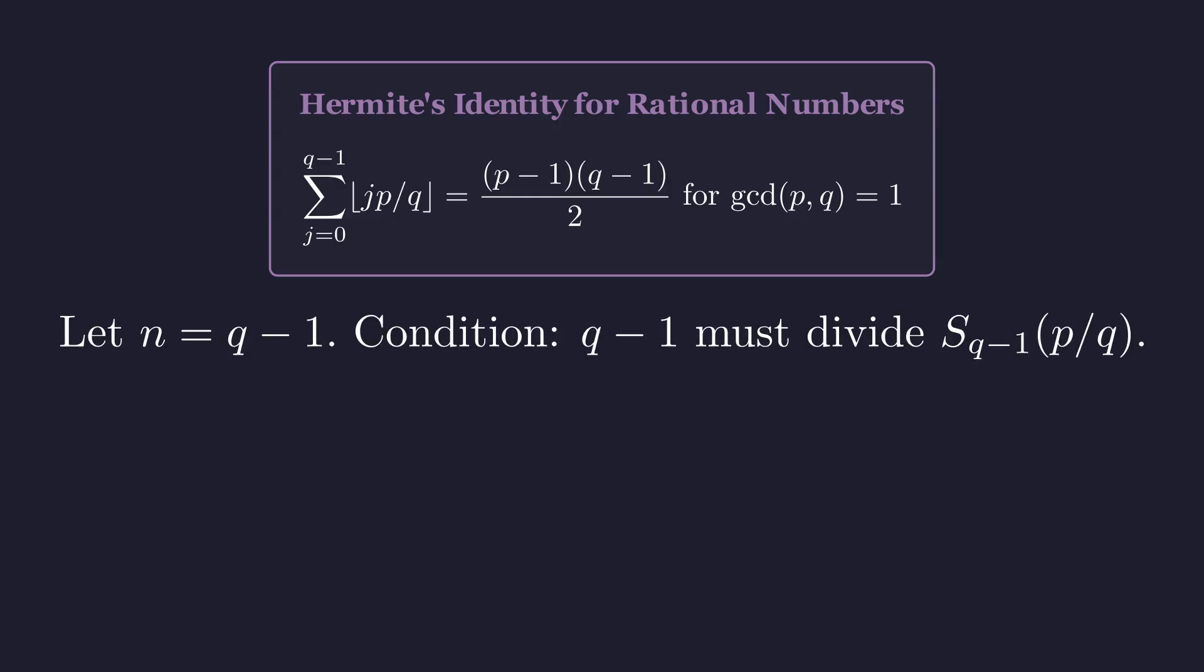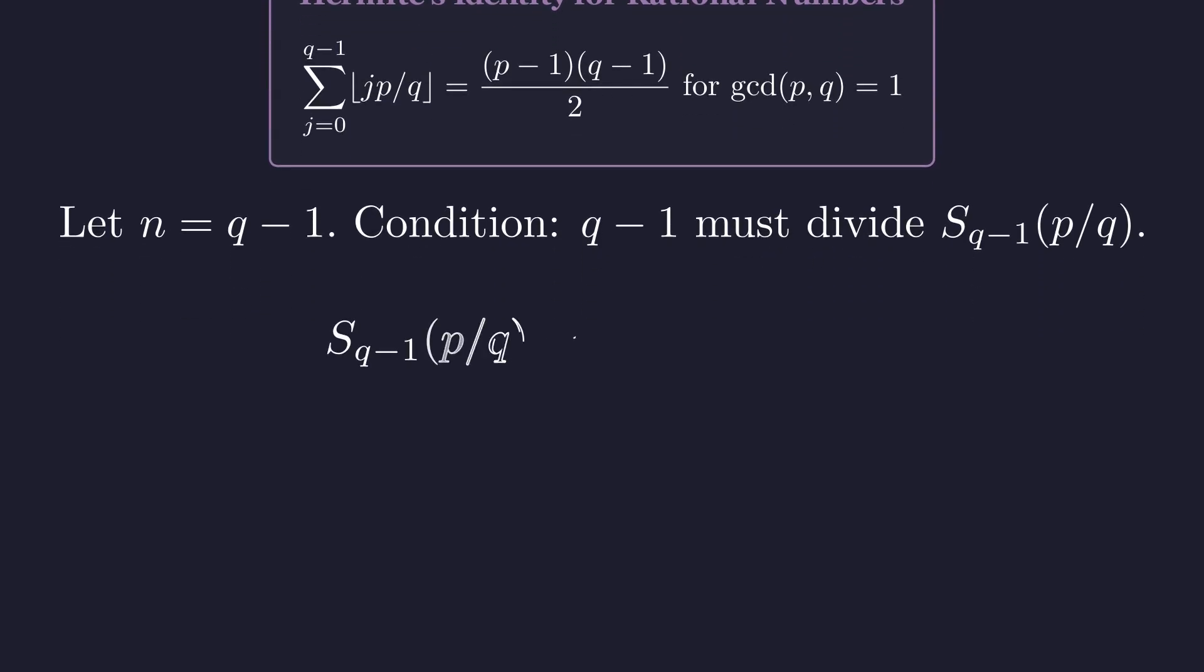Let's choose n to be q minus 1. The problem requires this n to divide the sum up to this point. Using the identity, we know the exact value of this sum. For q minus 1 to divide this expression, p minus 1 over 2 must be an integer. This forces p to be odd.